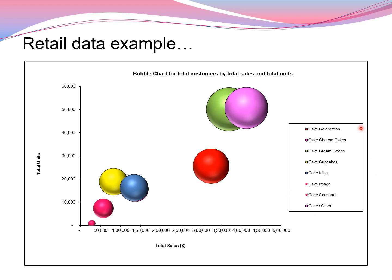If you skip noautolegend and you want to see the legend, you can write just legend and the legend will appear. As you can see, these are the sizes of the bubbles, and the maximum bubble size is related to the green color which represents cake cream goods.